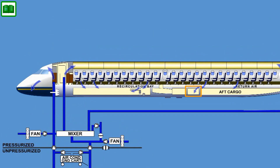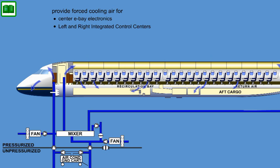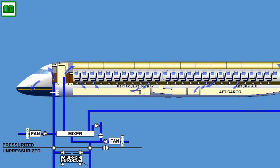The center ebay ventilation system has three fans, which provide forced cooling air for the center ebay electronics, the left and right integrated control centers, and SPDA-2. The fans draw air from the rear cabin return and expel it towards the underfloor recirculation bay. Flow sensors are used for fan flow health monitoring.